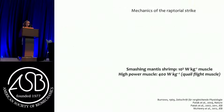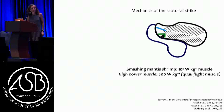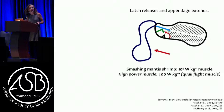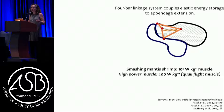The mantis shrimp can generate 10 to the fifth watts per kilogram of muscle - this is impossible for muscle alone, since higher-power muscle outputs around 400 watts per kilogram. In a mantis shrimp, there's a big contraction of an opening muscle, but nothing moves because the latch is holding it in place. When the latch opens, the appendage can move - but it's still not muscle opening it. Instead, it's a linkage system and an elastic structure: the muscle stores elastic energy in a spring, and that energy is delivered to the appendage through the linkage system, not the muscle.